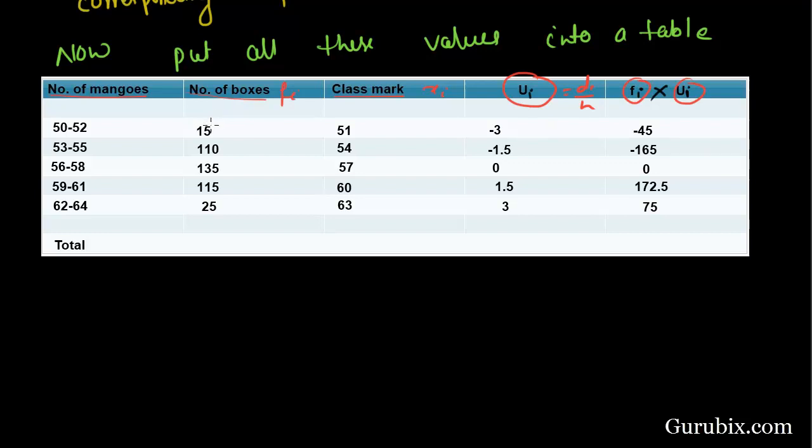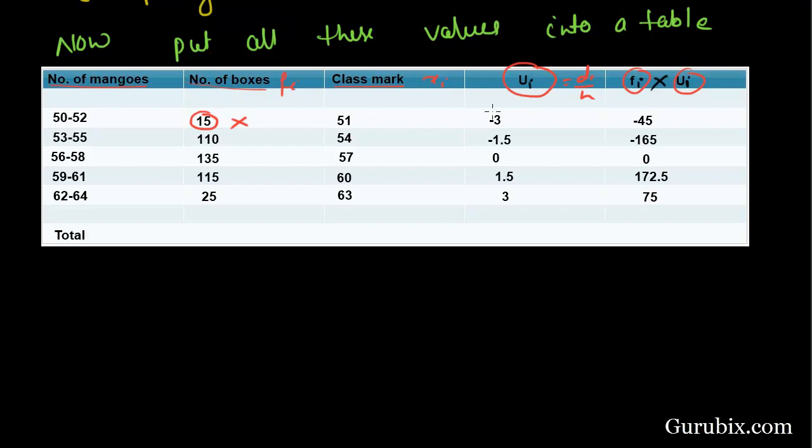We can see the first term of fi into first term of ui is equal to the first term of fi ui. Similarly, we can see 110 into minus 1.5 is equal to minus 165. Similarly, 135 into 0 is equal to 0. The sum of all terms of fi is equal to summation of fi is equal to 400. This is the sum of all terms of fi. And the sum of all terms of fi ui is equal to 37.5.